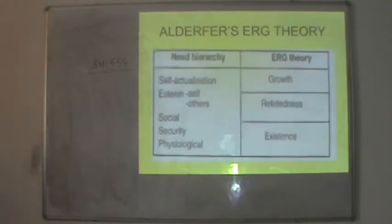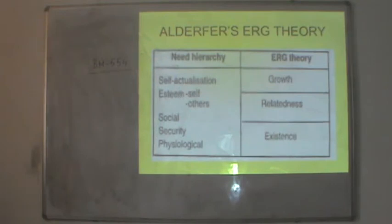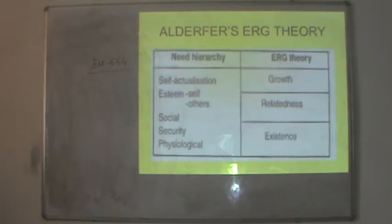The second theory is Clayton Alderfer's ERG Theory, which is a development over Maslow's Need Hierarchy Theory. Here, the same five sets of needs given by Maslow have been clubbed into three, because Alderfer believed there is a very small line of demarcation between certain needs and so they can be clubbed together. The ERG theory reduces the five needs into three sets: existence needs, relatedness needs and growth needs.